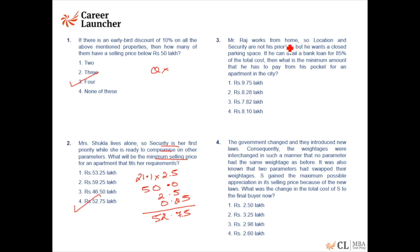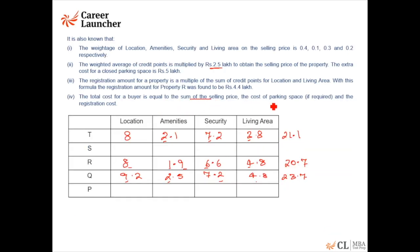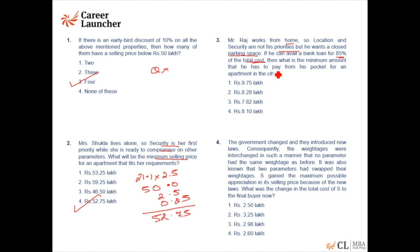Question 3: Mr. Raj works from home, so location and security are not his priorities, but he wants a closed parking space — 5 lakhs added. If he can avail a bank loan for 85% of the total cost, what is the minimum amount he has to pay from his pocket? He pays 15% of total cost. Since he has no location or security preference, we go for the cheapest flat.